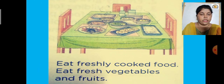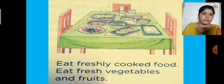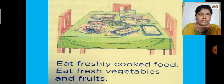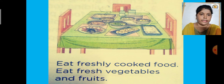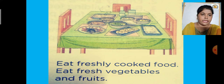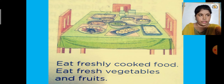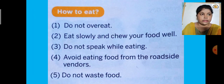The next good food habit is: eat freshly cooked food and fresh vegetables and fruits. You should not eat stale food that was cooked two or three days ago. Your mother provides you with fresh, properly cooked food. Eat freshly cooked meals and make sure your fruits and vegetables are also fresh. You should not waste or spill food either.